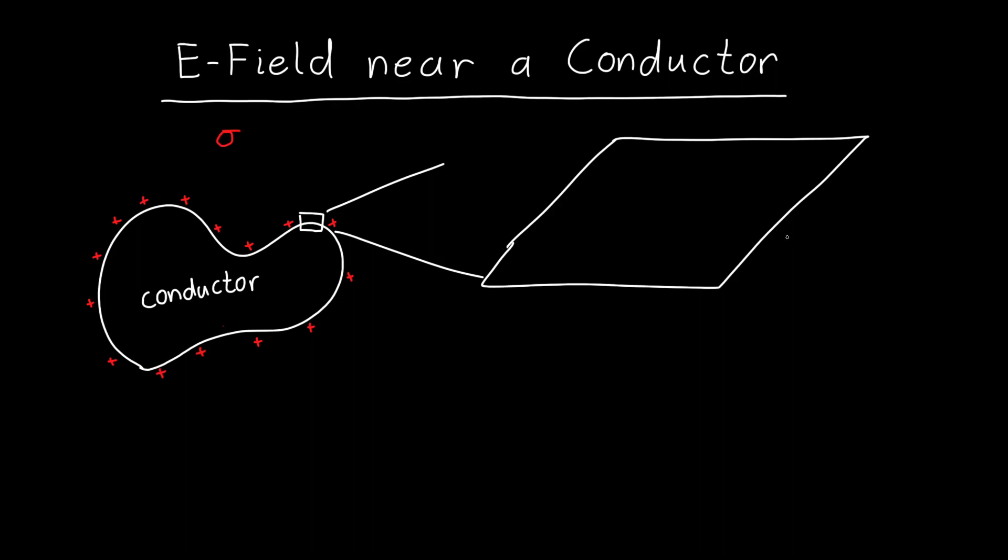And in particular if we zoom in really far it'll look like an infinite flat plane. So if we're close enough to the surface then we can treat an arbitrary, very small section of this conductor as if it were an infinite plane with some surface charge.